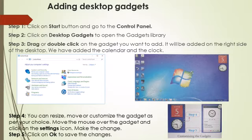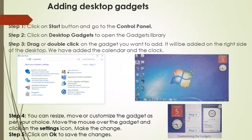As you have seen how useful desktop gadgets are, let us learn how to add them. In the first step, click on the Start button and go to the Control Panel, then click on Desktop Gadgets to open the gadgets library. After that, drag or double click on the gadget you want to add. It will be added on the right side of the desktop. We have added the Calendar and the Clock. Then you can resize, move or customize the gadget as per your choice. Move the mouse over the gadget and click on the Settings icon, make the change, and finally click OK to save the changes.